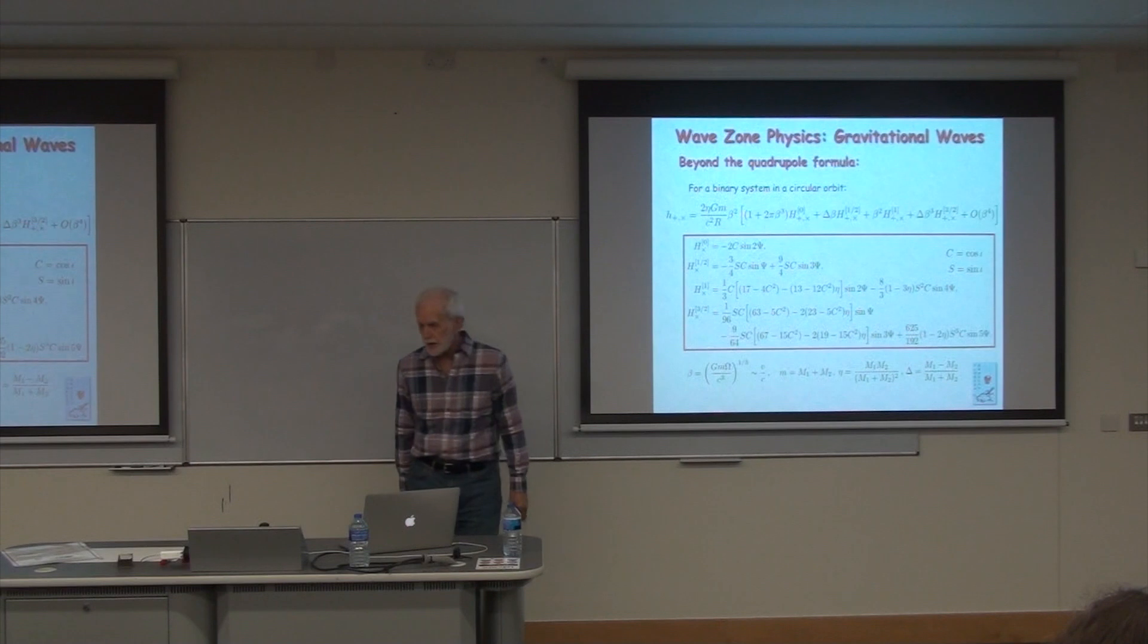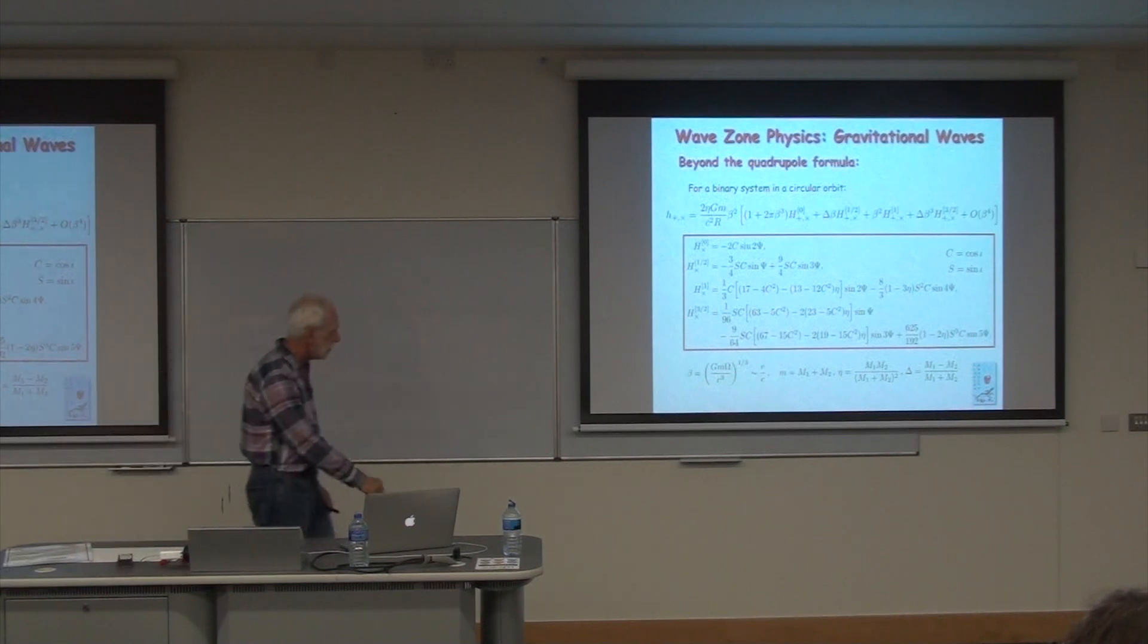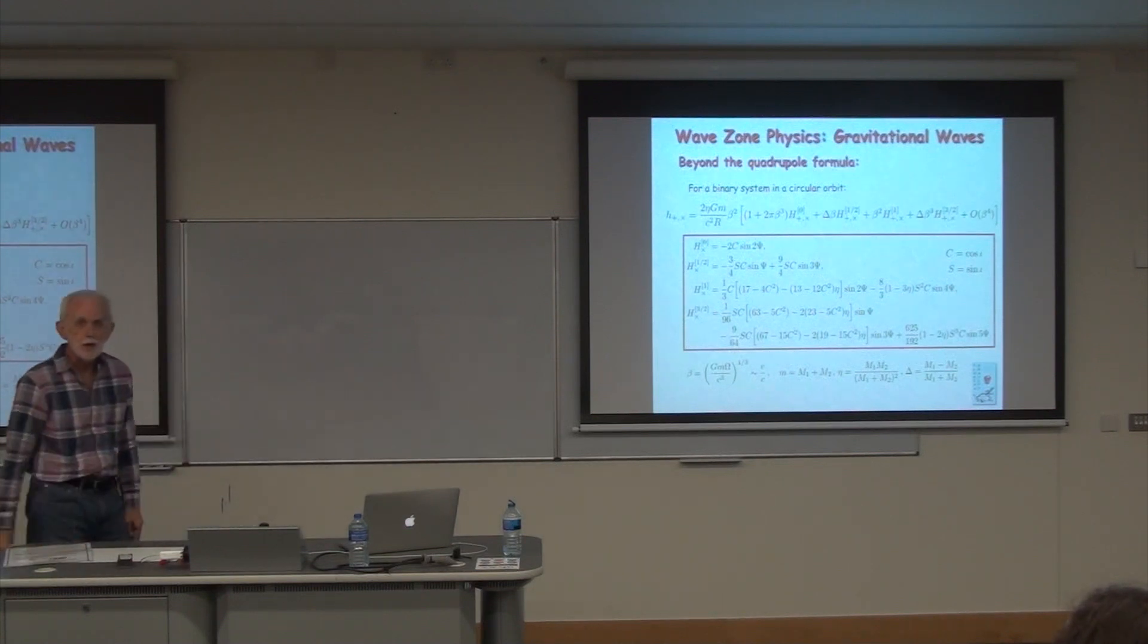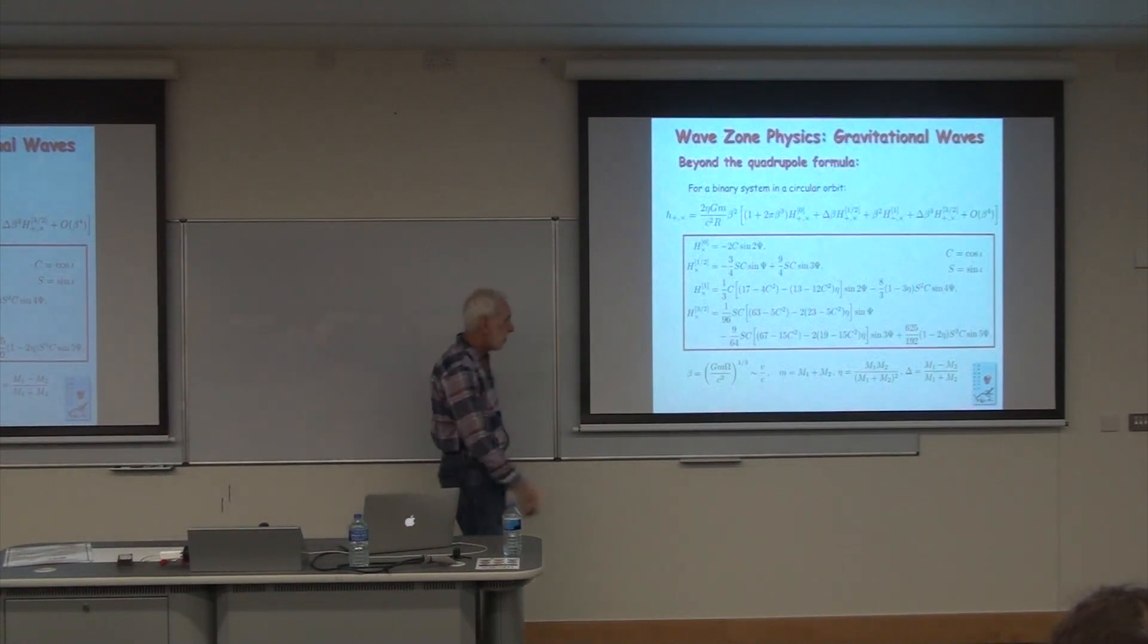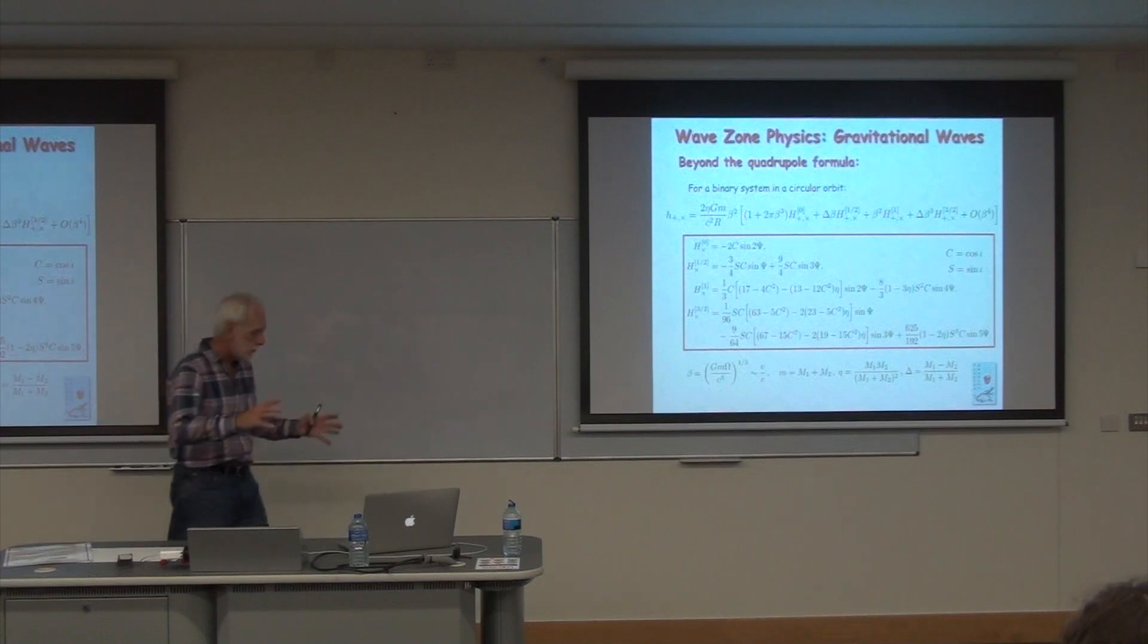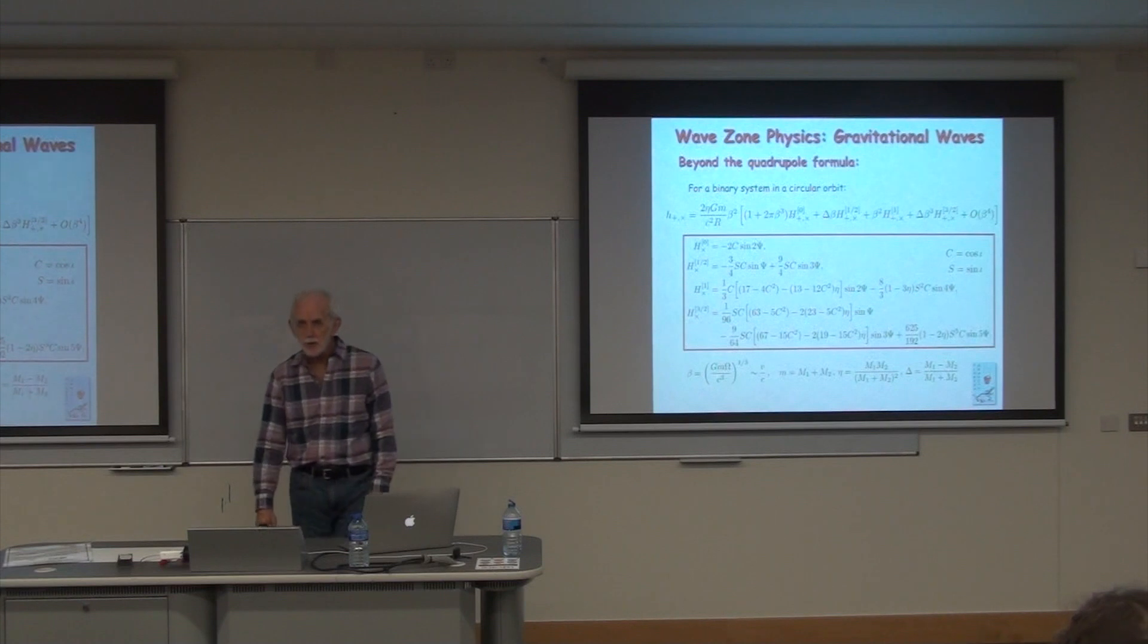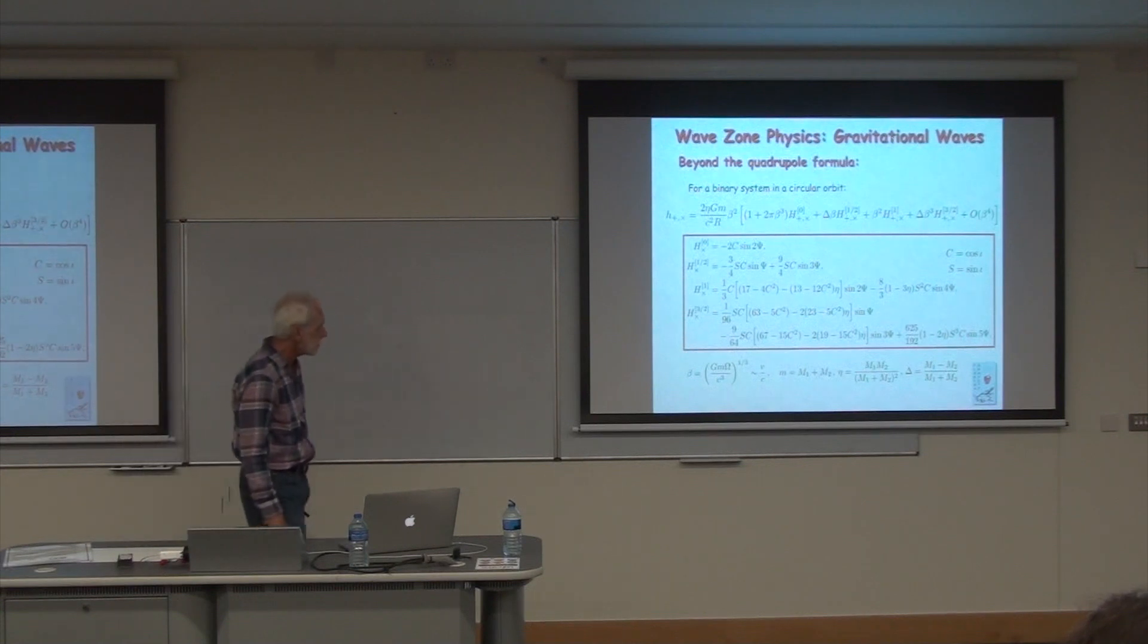Let me illustrate what the answer might look like. Consider a binary system in a circular orbit. That would apply to an inspiraling binary. Many of the inspiraling binaries, like binary black holes or neutron stars, have been spiraling over many years. Gravitational radiation tends to circularize orbits at the same time as it causes them to shrink. So a circular orbit emitting gravitational waves is certainly of good astrophysical interest.